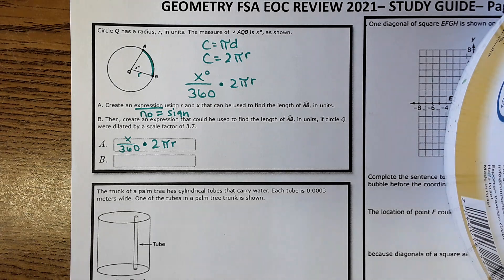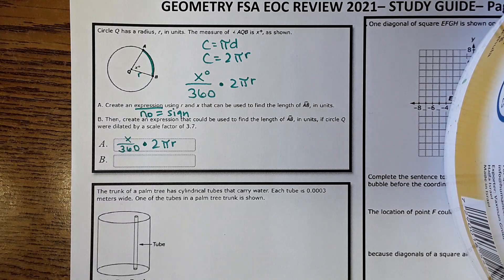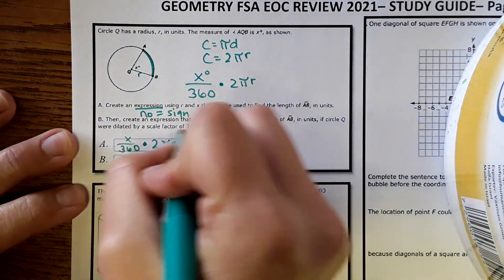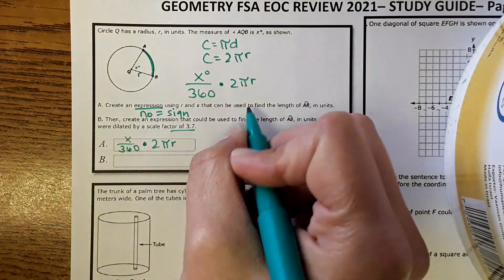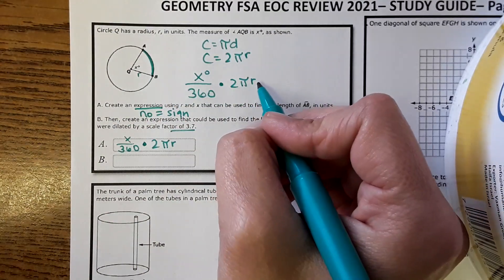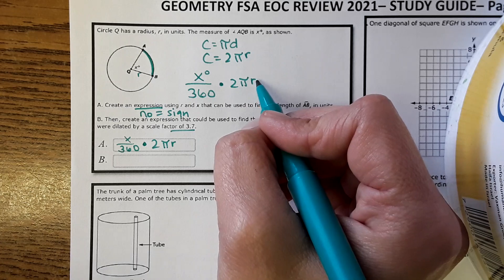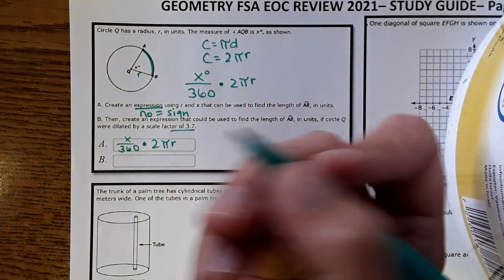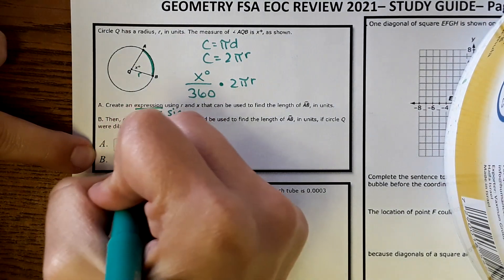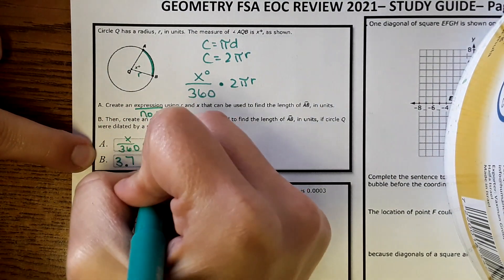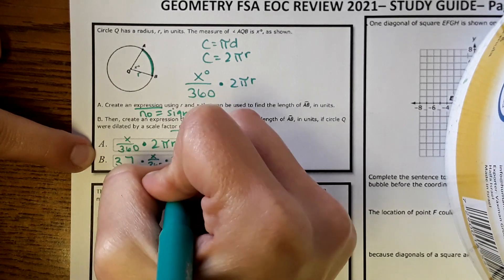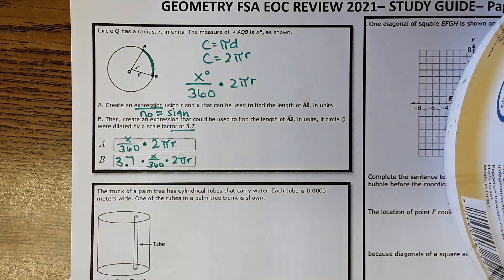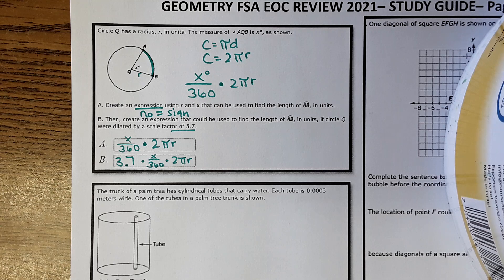Then for B, it says create an expression that could be used to find the length of AB in units if circle Q was dilated by a scale factor of 3.7. If something is dilated by that scale factor, the dimensions of that shape would change by a factor of 3.7. So technically, you can multiply the radius by 3.7, but it's all multiplications. So just 3.7 times X over 360 times 2 pi R would give you the length after a dilation of 3.7.